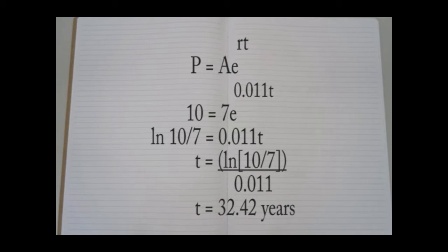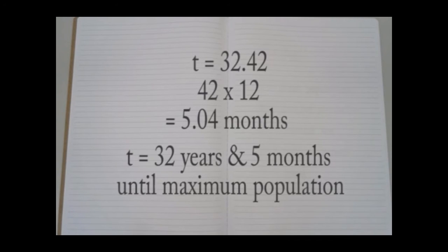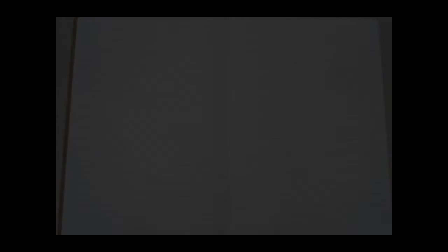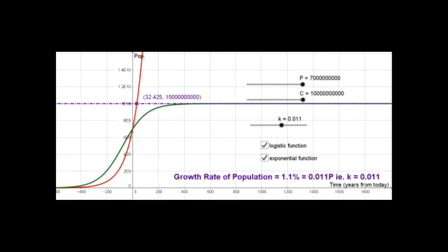we are able to calculate how many years are left before the Earth reaches its maximum population. This proves that the estimated result is 32.42 years. By converting the decimal form into months, it can be found that the global population will reach a maximum of 10 billion people in an estimated 32 years and 5 months, approximately in the year 2049.